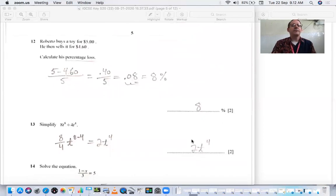Number 12, Roberto buys a toy for $5, sells it for 4.60. Calculate the percentage of loss. 5 minus 4.60 is 40 cents. The original cost was 5. So 40 cents divided by 5 gives you 0.08, which is an 8 percent loss.